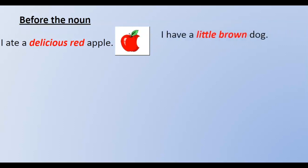Here we have the examples. Before the noun, it would look like this: I ate a delicious red apple. Or, I have a little brown dog.